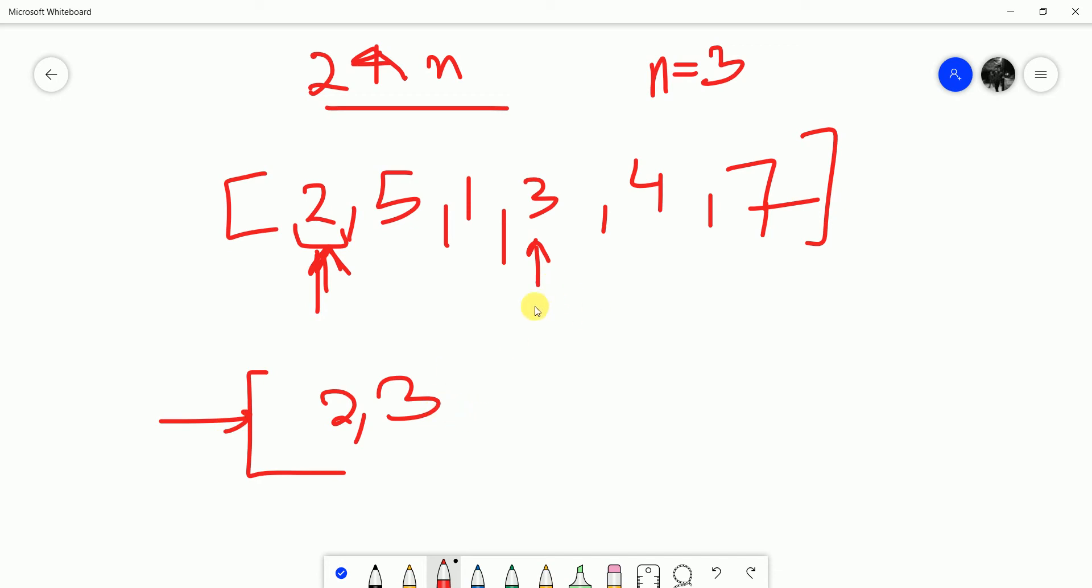Then we have digit 5 followed by n plus i, that is n is 3 plus 1. Initially i is 0, then i is 1, then i is 2. So initially what we did is 3 plus 0, so it was here. So we did 2 comma 3.